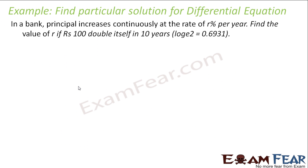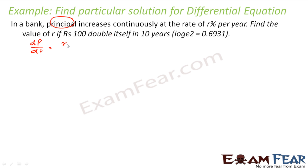Let's take one more question. In the bank, the principal increases continuously at the rate of r percent per year. Find the value of r if rupees 100 doubles itself in 10 years. The first line says the principal increases continuously at rate r percent — so if p is the principal, then dp/dt = r/100 · p.